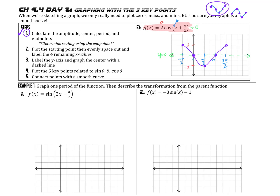Something to note: for each of these graphs, we're focusing on graphing just one period. This cosine graph would obviously continue making the same shape over and over, but we're only graphing one period, so there won't be arrows on the ends of the graph, even though this is a continuous graph. Our directions specifically say to graph one period and then describe the transformation. Go ahead and pause the video to identify the key information — amplitude, center, period, and endpoints — then unpause and see how you did.